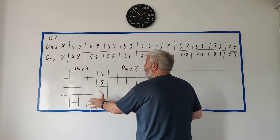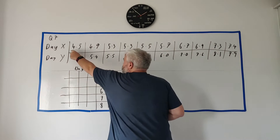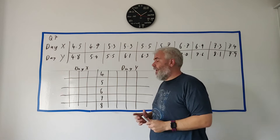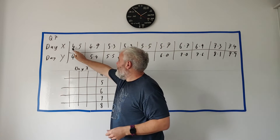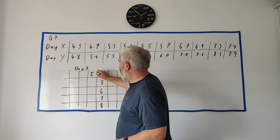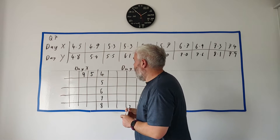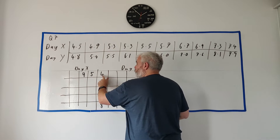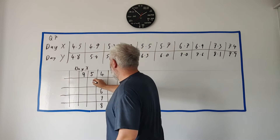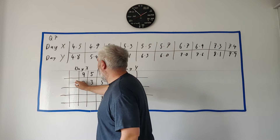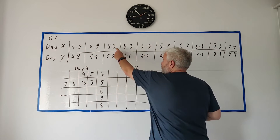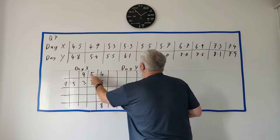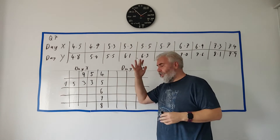Day X is on the left, Day Y is on the right. Starting with Day X, we take the numbers along the top row. The four here — if I put a five and a nine here, you would read this as 4.5 and 4.9. Moving onto the fives: three, three, five, and seven — so that's 5.3, 5.3, 5.5, and so on. Then with the magic of editing, I'll fill in the rest.